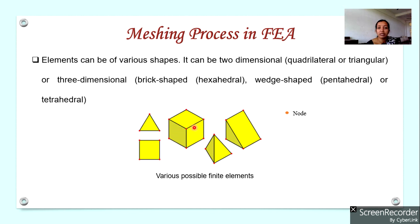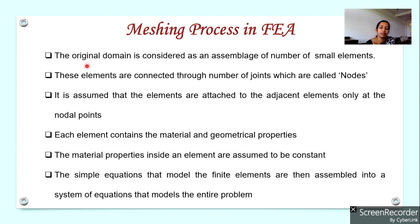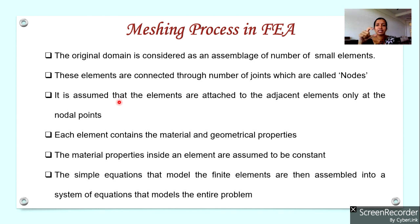In three dimensions, elements can be brick-shaped or wedge-shaped. The points shown in orange color are the nodes. The original continuous object is considered as an assembly of a number of such small elements, and the elements are assumed to be connected together at points known as nodes. Nodes act as pins or drops of glue that hold elements together, and one element is connected to adjacent elements at nodal points only.